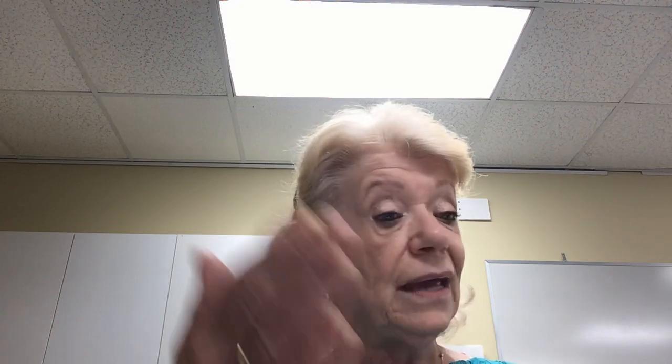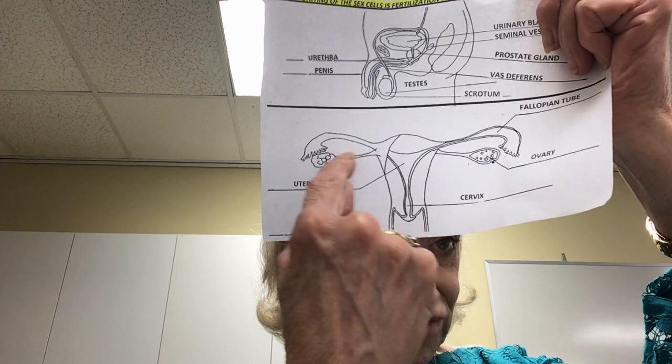Sperm is the male sex cell or gamete. There is a head and a tail known as the flagellum — the flagellum gives sperm its ability to swim. During one ejaculation there can be as many as 300 million spermatozoa. Unlike the egg, sperm do have the ability to move, but they need fluid. Many of the organs in the male reproductive system are there simply to provide semen — the fluid that sperm travel in — packed with sugars because sperm need a lot of energy.